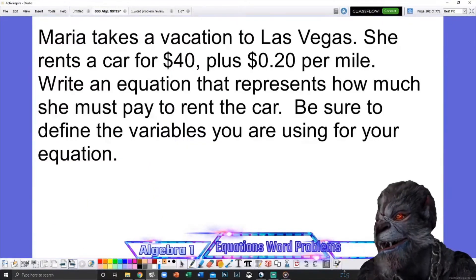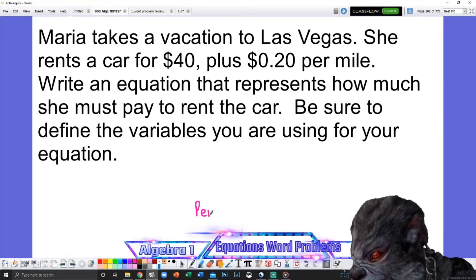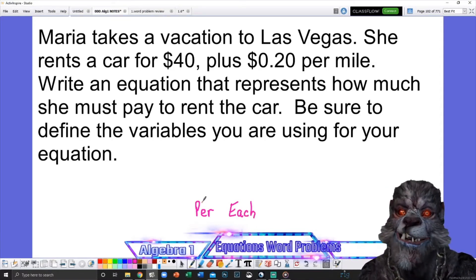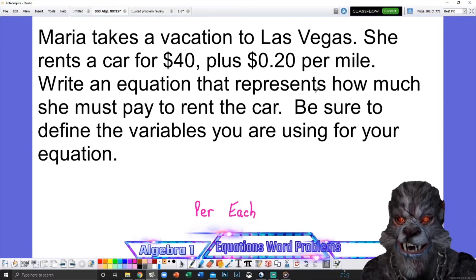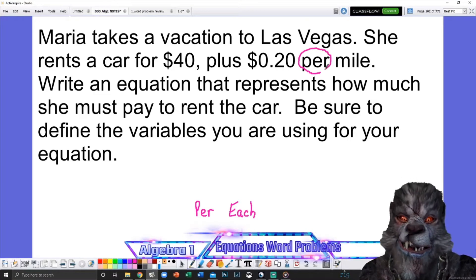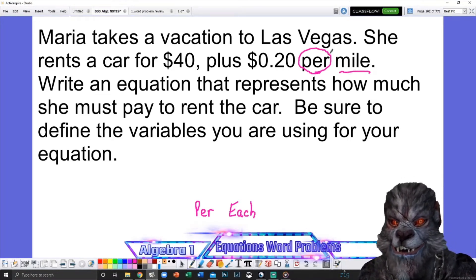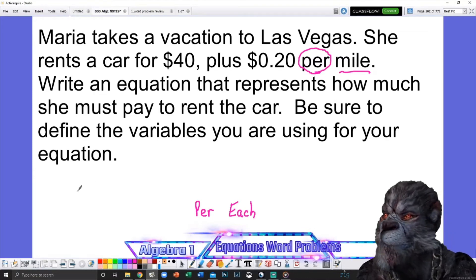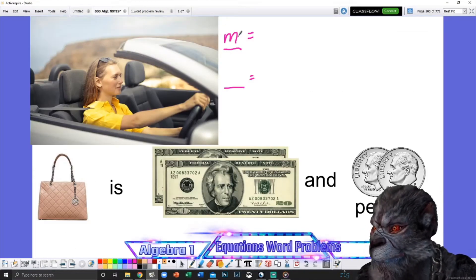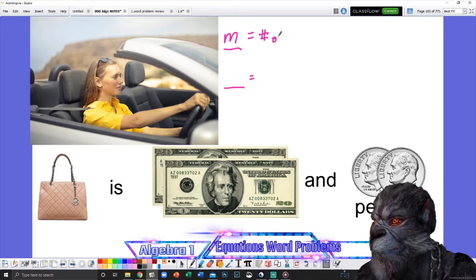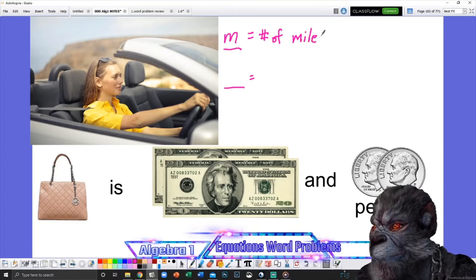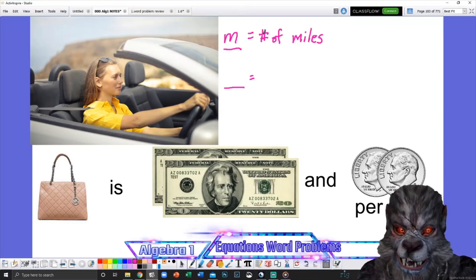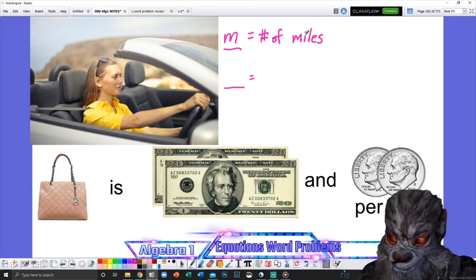So Maria is driving a car, and the cost of the car is $40 plus 20 cents per mile. So let's see if you can come up with this equation with me. So first, I need to figure out two things. That would be my two variables. So I'm going to have two different letters, and then what they mean. So one hint that I have for you is you look for the word per or each. These two words are very important. If you can find either of those words, you're normally in really good shape.